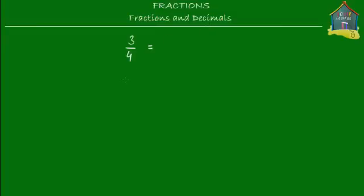Let me first make a number line and try to put three quarters, or three fourths, on it. So I have a number line starting at 0 and running up to 4, and each of these intervals is at an increment of 1. So the first mark is 1, the second is 2, the third is 3, and the fourth is 4.